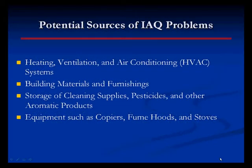Here are some of the more common sources of IAQ problems. It is estimated that almost 50% of IAQ problems can be traced back to the HVAC system. The proper maintenance of this system is crucial to favorable IAQ conditions in a building. Some of the other common contributors are building materials and furnishings, storage of cleaning supplies, pesticides, and other aromatic products, and equipment such as copiers, fume hoods, and stoves.